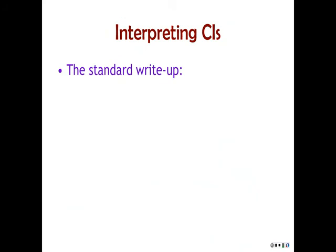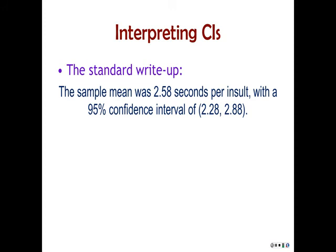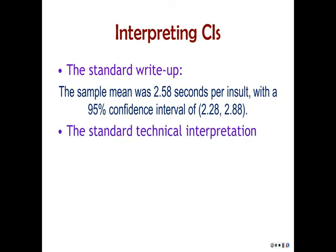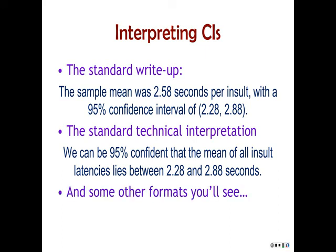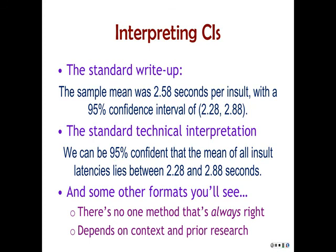When interpreting confidence intervals, there's a standard way to do it. You'll say something like: 'The mean was X with a 95% confidence interval of [this, that].' The standard technical interpretation is a bit long, so the short version is: 'We are 95% confident that the true population mean — for example, the mean of all insult latencies — lies between 2.28 and 2.88 seconds.' That word 'confident' is wishy-washy, but that's an important wishy-washy to keep us from writing a ridiculously long sentence every time. There's no one method that's always exactly right; it sort of depends on context and prior research.